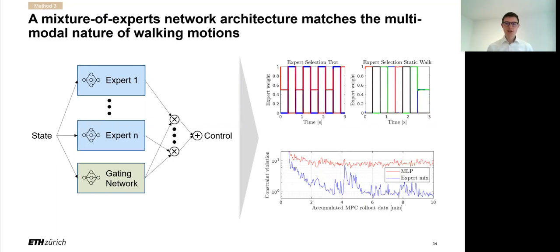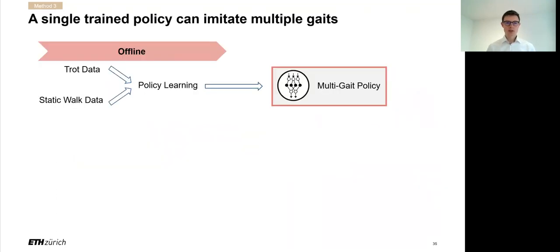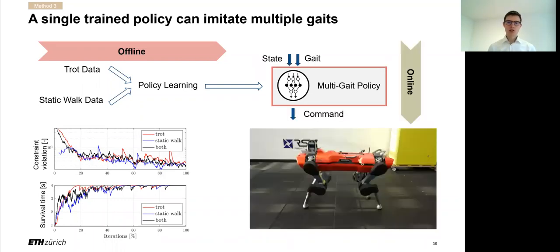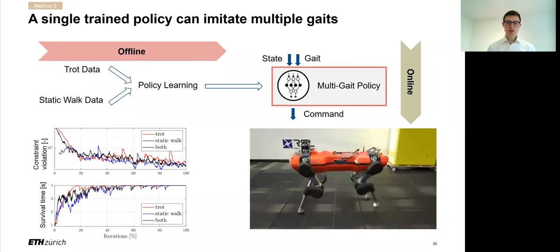What we can do with that now is not only learn policy on a single gait, but train multi-gait policies. So for this, we can generate MPC trotting and static walk data, put them together into policy learning and get this multi-gait policy. Already during the learning process, we see that the multi-gait policy is pretty much on par in terms of performance with the policies trained on a single gait only. But on runtime, as we have now conditioned this network on the gait, we can execute new kinds of behaviors. For example, new gaits and new kinds of transitions like this transition between static walk and trot, which was not seen during the training.